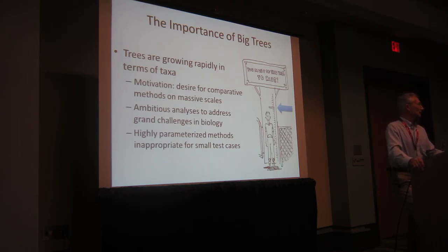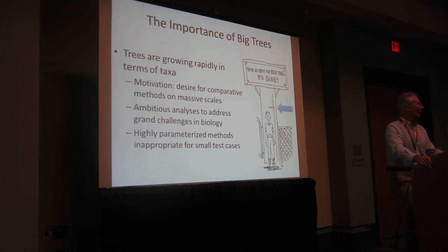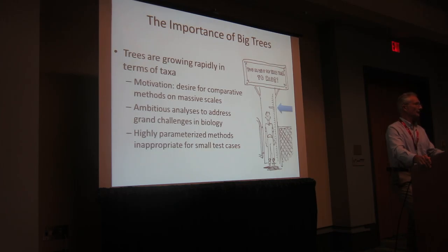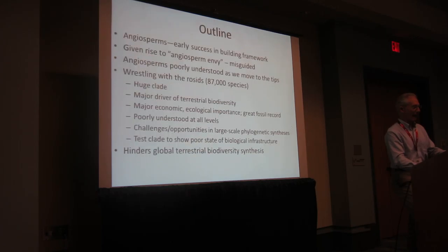Big, comprehensive trees allow us to do things that we can't do with small trees — just like this poor guy can't get on the Ferris wheel, he's just not big enough. You have to have a tree that's comprehensive and large to address some of the big comparative, massive questions — the grand challenges we want to address in biology.